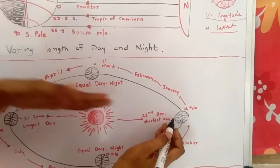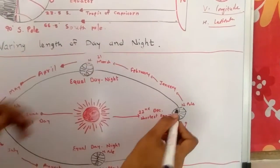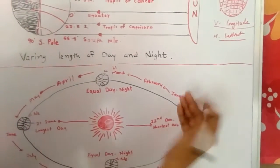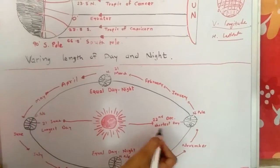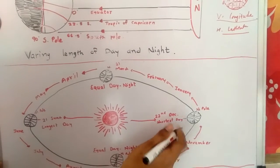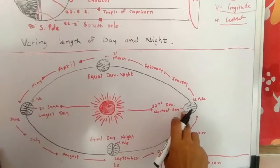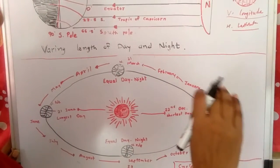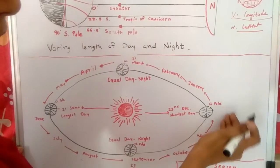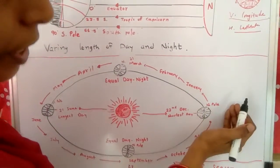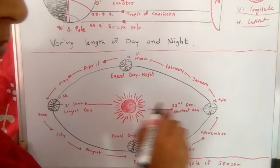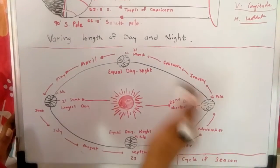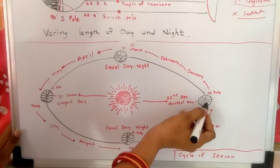When the sun's rays fall slanted in the North Pole, the temperature is cold and there is less heat, so days are shorter. 22nd December is known as the shortest day. When the sun is over the Tropic of Capricorn in the South Pole, days are shorter and nights are longer in the North Pole.